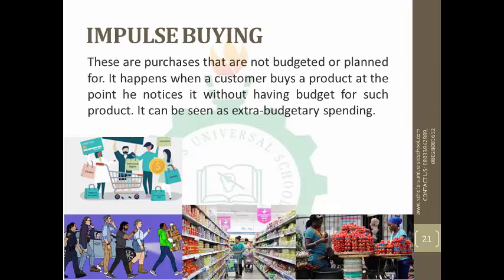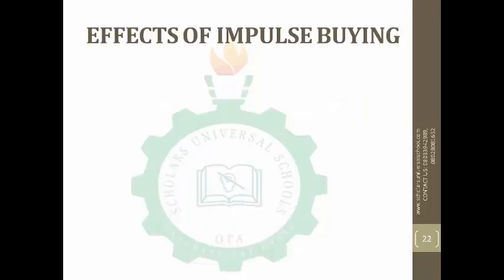Now I'm moving to the next part: impulse buying. What is impulse buying? These are purchases that are not budgeted or planned for. Sometimes when we follow Mummy or Daddy to the market, shopping mall, or supermarket, we may plan to buy ice cream, but when we get there we see some biscuits and say 'Daddy, I want that biscuit!' That is impulse buying — you are buying things you have not projected for or planned for. It happens when a customer buys a product at the point they notice it without having budgeted for it. It can be seen as extra-budgetary spending.